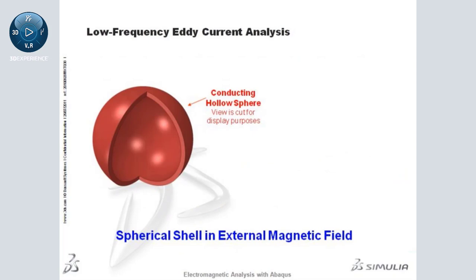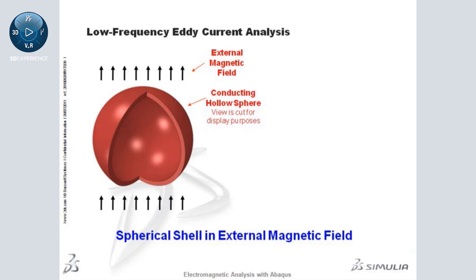This next example includes a conducting hollow sphere in an external magnetic field. In this case, rather than modeling the coil windings, the magnetic field is specified directly. We assume that the field's source is far away from the spherical shell and unaffected by the sphere's presence.